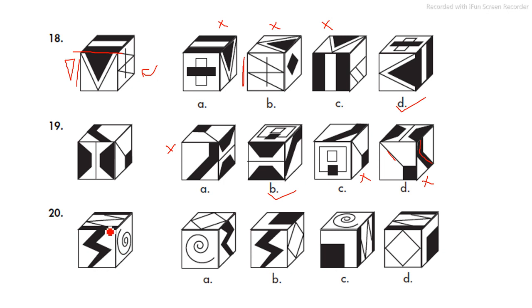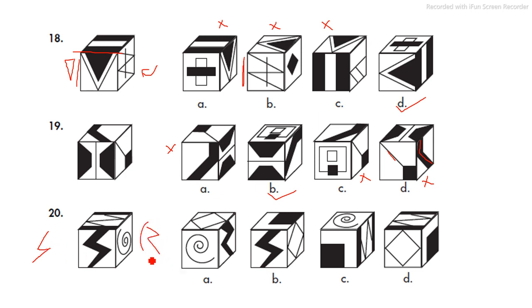Moving on to the next question. Here we see a lightning structure — a symbol of lightning. We try to figure out the answer based on this lightning structure. The lightning structure is found in options A and B; in C and D we don't find that structure, so we compare A and B first. In option A, the lightning structure appears as a mirror image of the one in the main figure, so since it is a mirror image, A is eliminated.